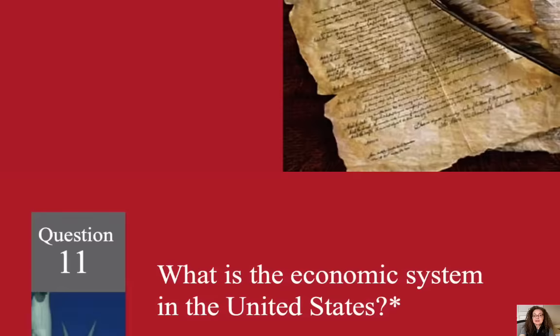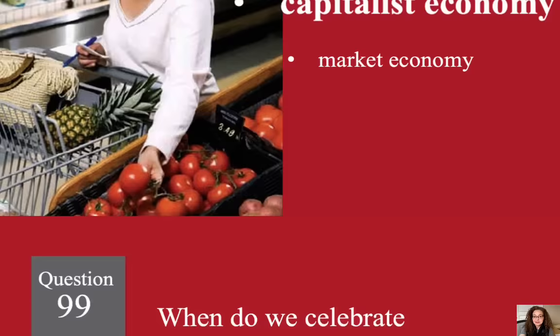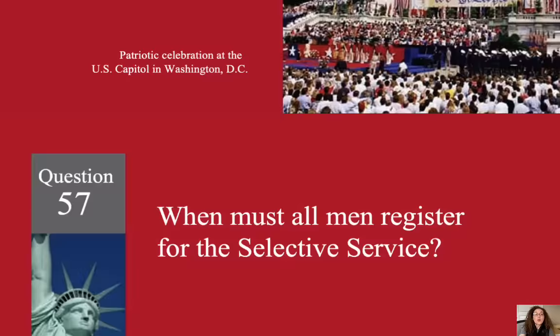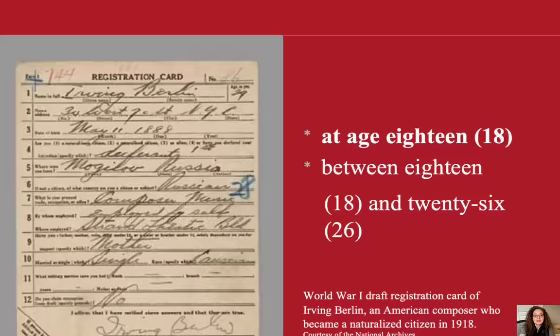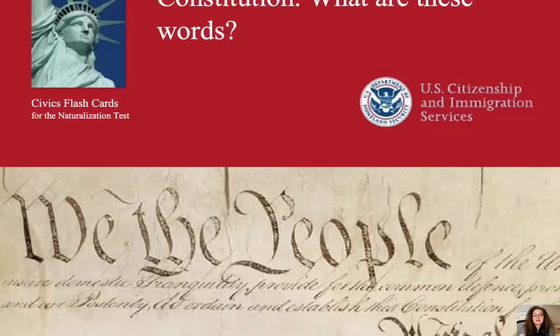What is the economic system in the United States? Capitalist economy. When do we celebrate Independence Day? July 4th. When must all men register for the Selective Service? At age 18. The idea of self-government is in the first three words of the Constitution. What are these words? We the people.